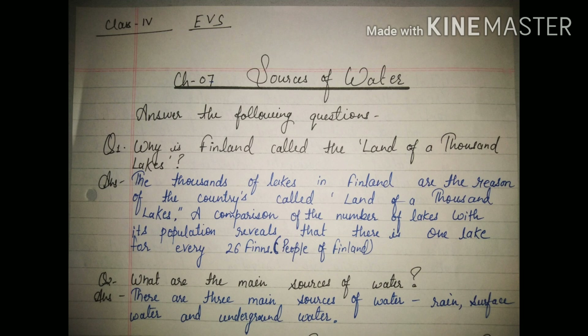Question two: what are the main sources of water? Answer: there are three main sources of water — first is rain, second is surface water, and third is underground water.